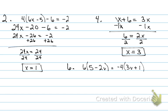I unpack it by doing the distributive property. Six times five is 30, six times negative two is negative 12v, giving: 30 minus 12v equals negative 12v minus four. Now, just like in number four, I need my variables on one side. I see negative 12v on both sides, so I need to move one to the other side.